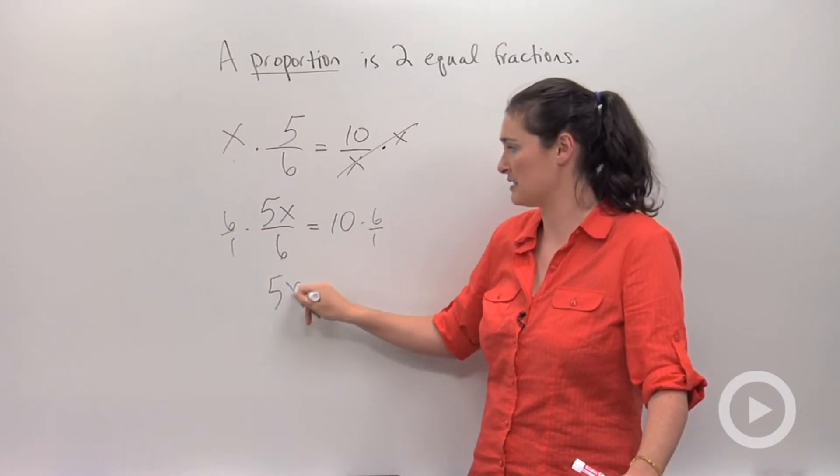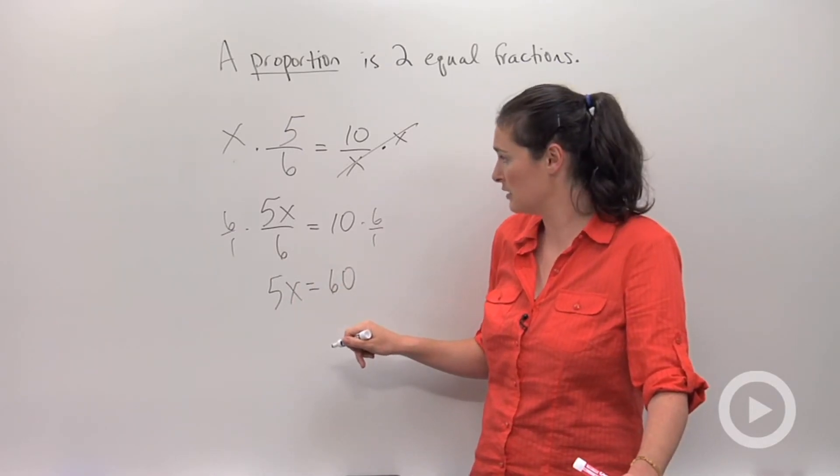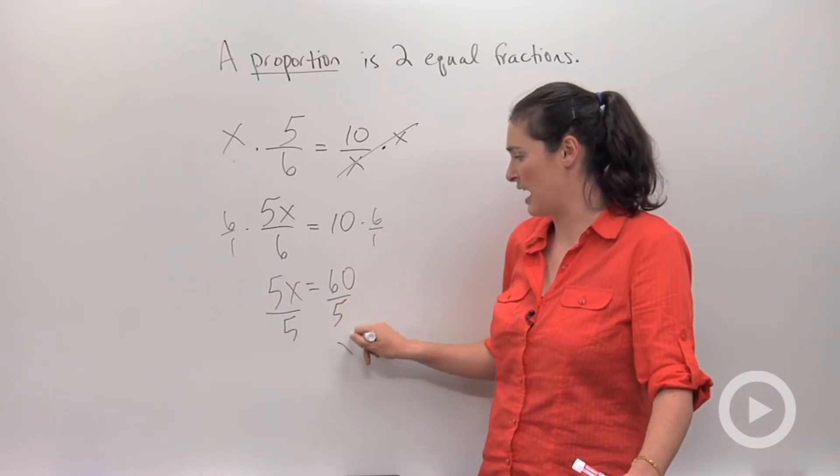So you have 5x equals 60, and then finally divide both sides by 5 to see x equals 12.